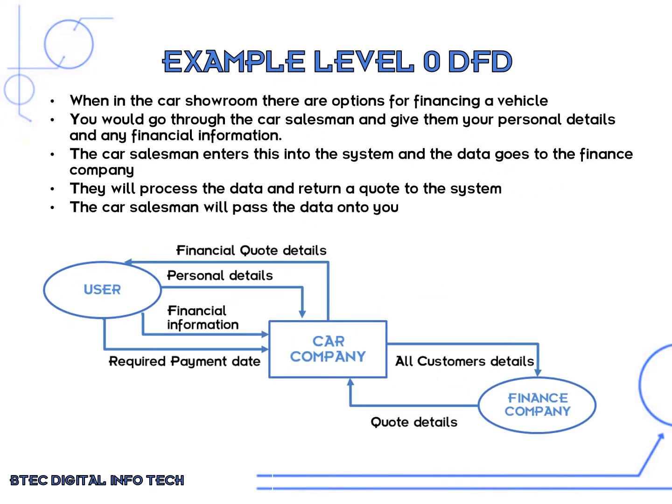Here is an example level 0 data flow diagram. When in the car showroom there are options for financing a vehicle. You would go through the car salesman and give them your personal details and any financial information like your salary and things like that.